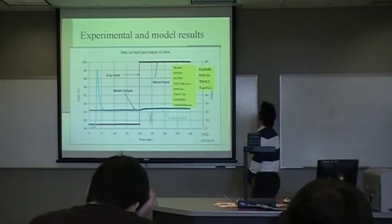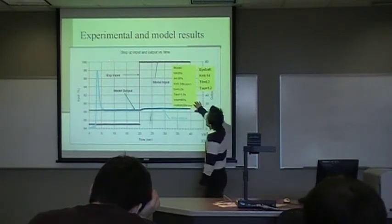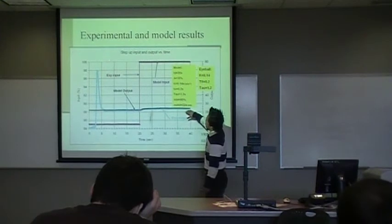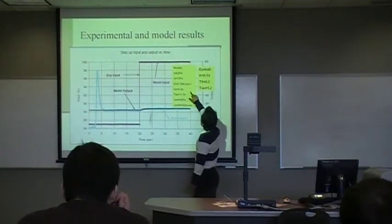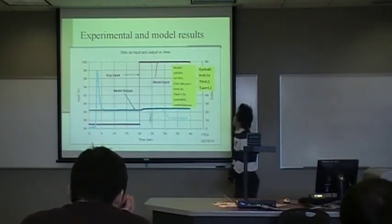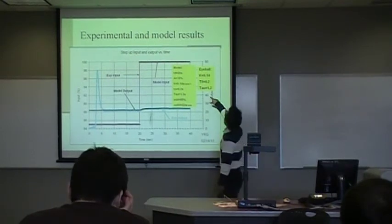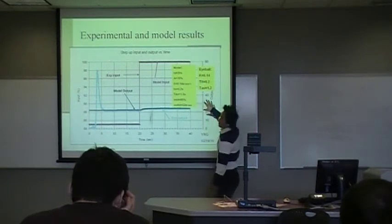Okay, here's a plot of input and output versus time, and here we have our model fit pretty well for our experimental data. In the model we have K equal to 0.14 pounds per minute per percent. All three parameters - they are really close, they fit pretty well.